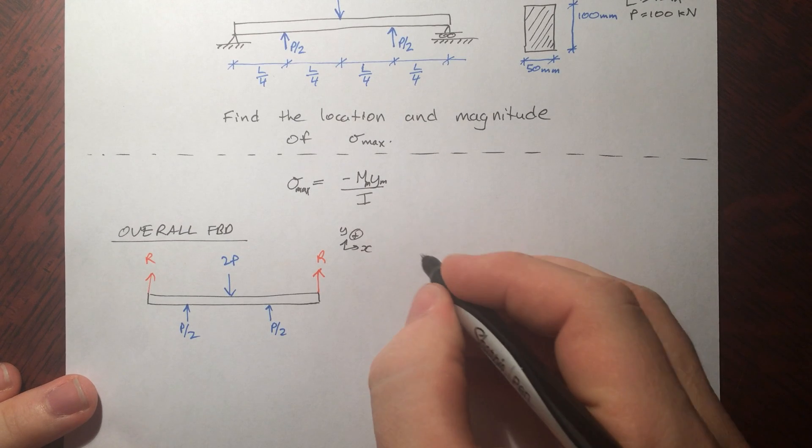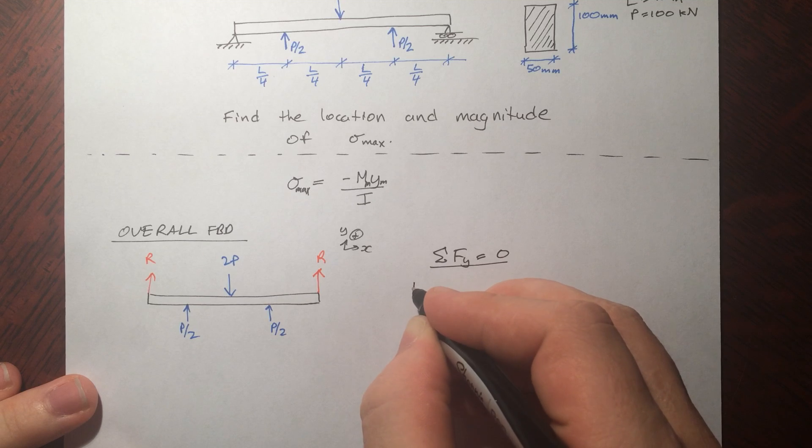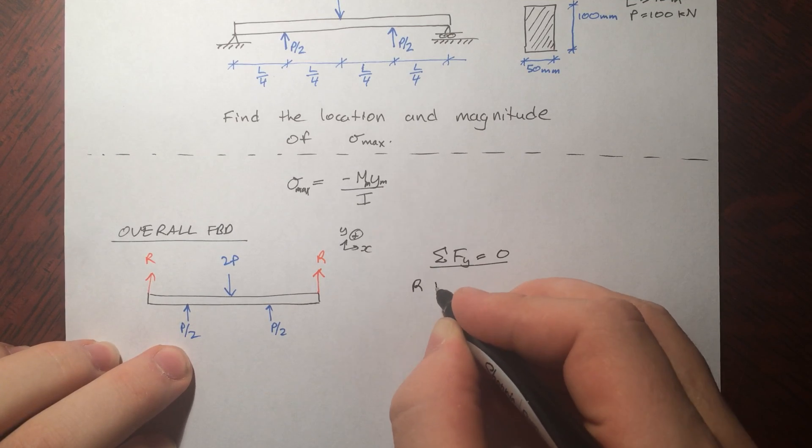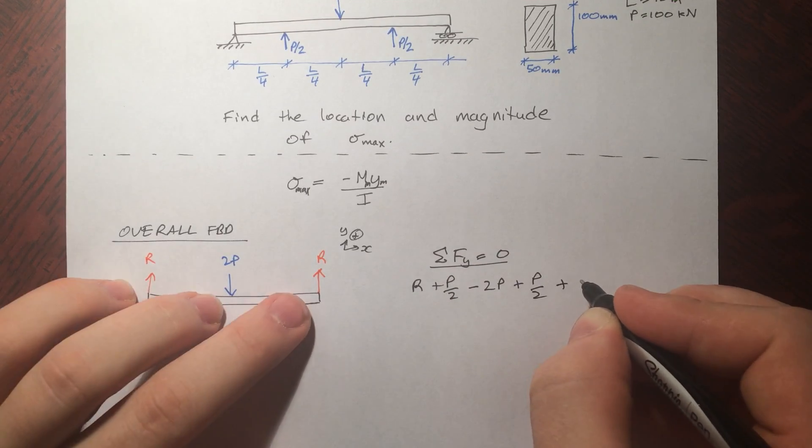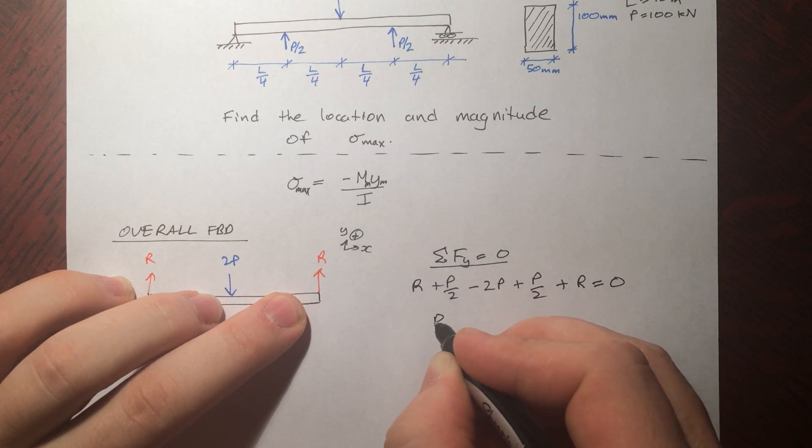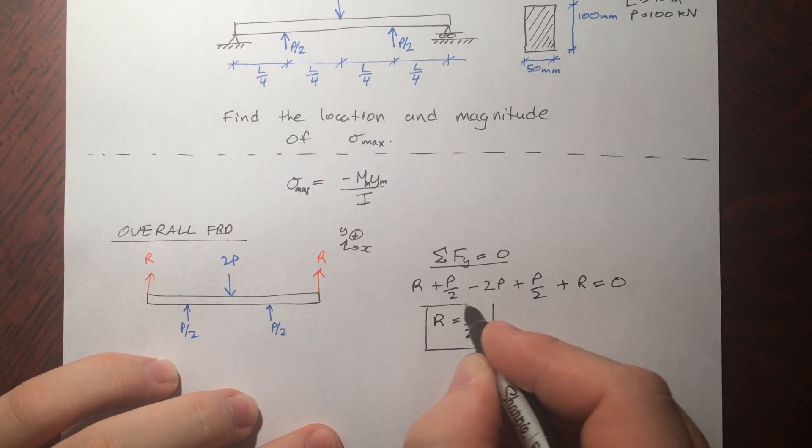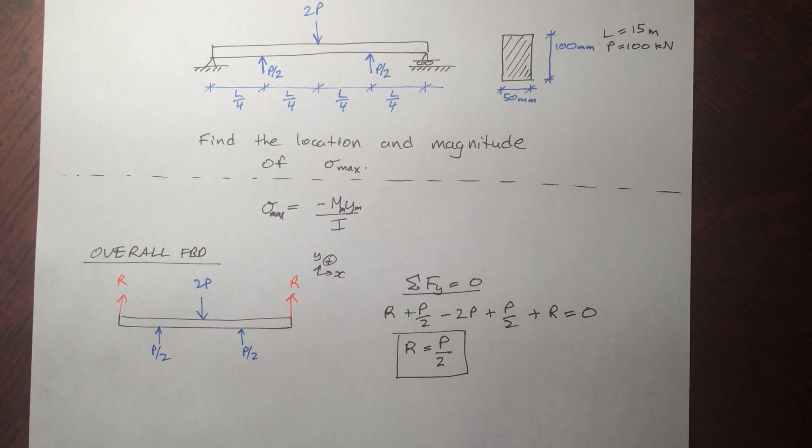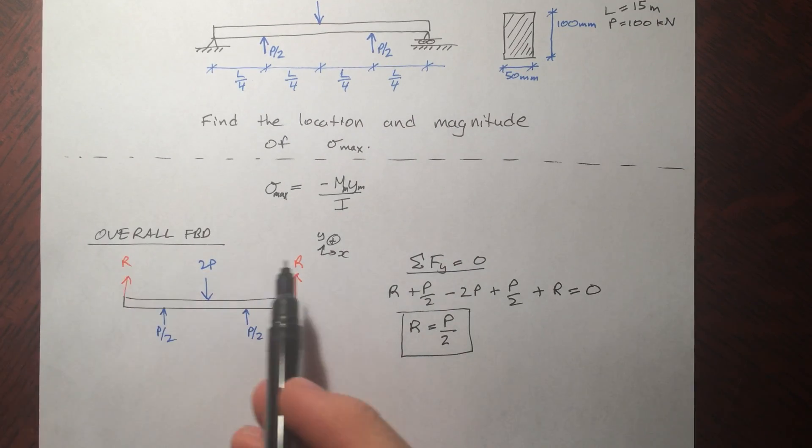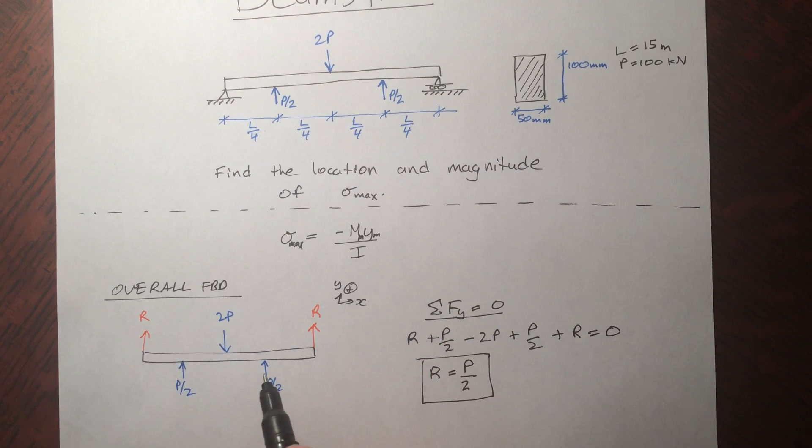If we just go through and sum up the forces in the y, I'm just going to solve the whole thing in variables since it's not too complicated and then just plug in the values at the very end. Now I assume the reactions were equal because of the symmetry of the whole situation. If you're not convinced, call this R1, R2, take bending moments and you'll find that indeed they are the same.